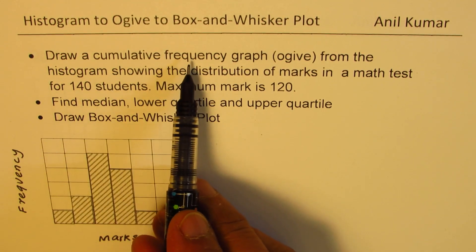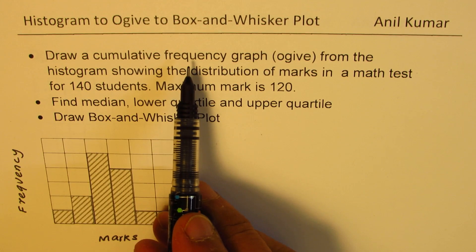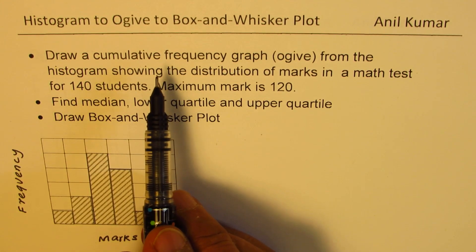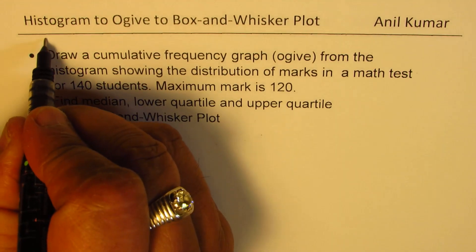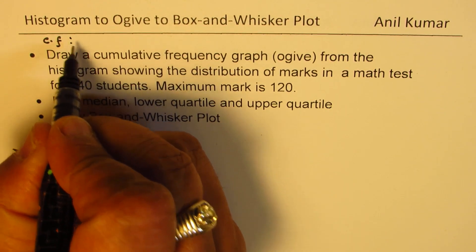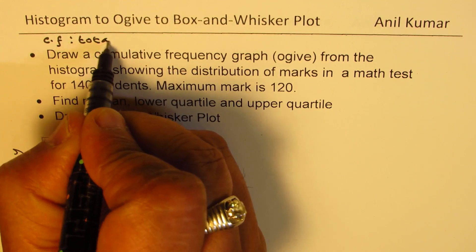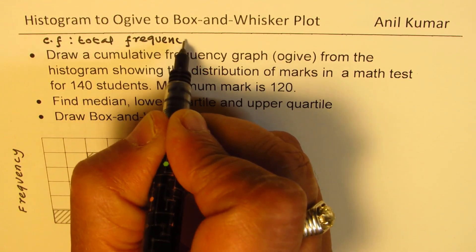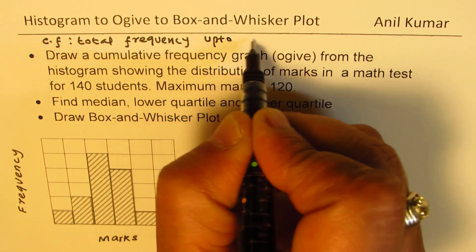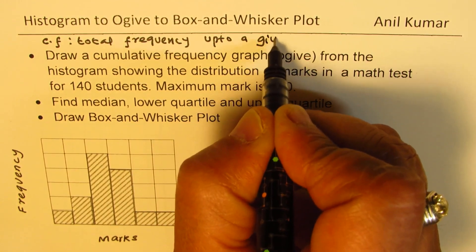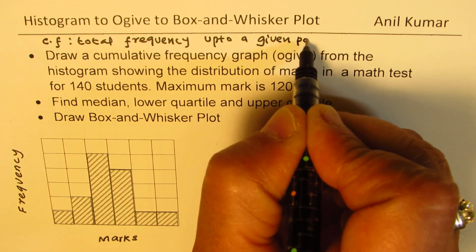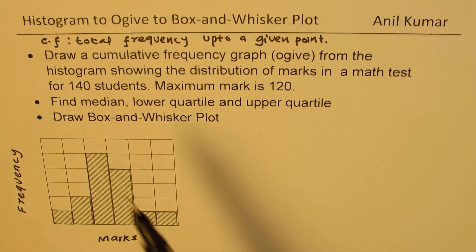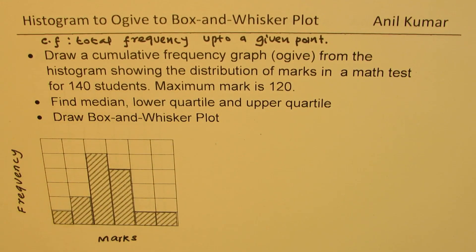Let's understand what cumulative frequency is. Whenever we talk about cumulative frequency, it is actually a total frequency up to a given point. So cumulative frequency is total frequency up to a given point. This is important to keep in mind. Now let's see how to draw a cumulative frequency graph from the histogram.